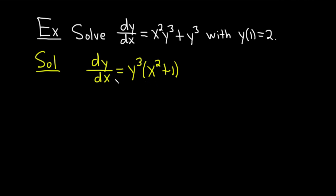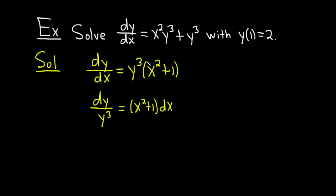Our goal is to get all of the y's together on one side with the dy, and all of the x's together on one side with the dx. So now we'll divide by y cubed and multiply by dx. We have dy over y cubed equals x squared plus 1 times dx. We divided by y cubed, multiplied by dx, and we've reached our goal — only y's on one side with dy, only x's on the other side with dx. Now we can integrate both sides.